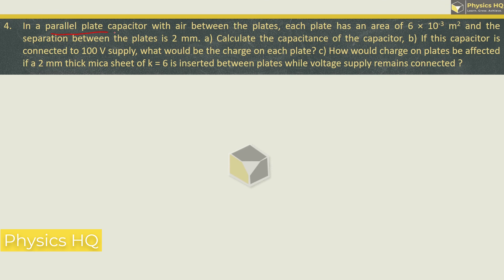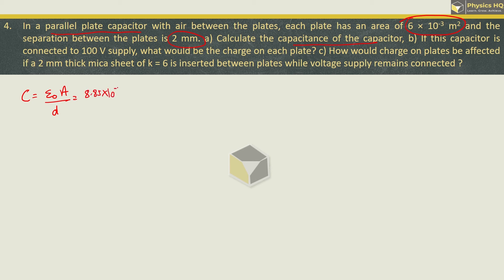Next: in a parallel plate capacitor with air between the plates, each plate has an area of 6 into 10 raised to minus 3, and separation between the plates is 2 mm. Calculate the capacitance. The formula is epsilon naught A by D. Epsilon naught is 8.85 into 10 raised to minus 12. Area is 6 into 10 raised to minus 3. Separation is 2 mm, which is 2 into 10 raised to minus 3 meter. The 10 raised to minus 3 cancels, and we get capacitance equal to 26.55 into 10 raised to minus 12 Farad.